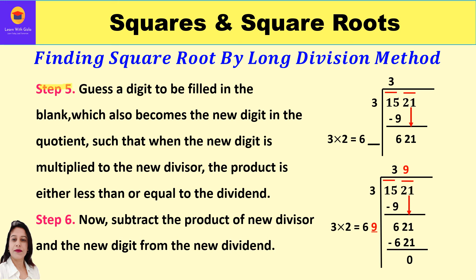In step 5, we guess a digit to fill in the blank, which also becomes the new digit in the quotient. When the new digit is multiplied by the new divisor, the product must be either less than or equal to the dividend of 621. So we need a number that goes in the blank and also appears in the quotient, such that the new divisor times that digit is ≤ 621.